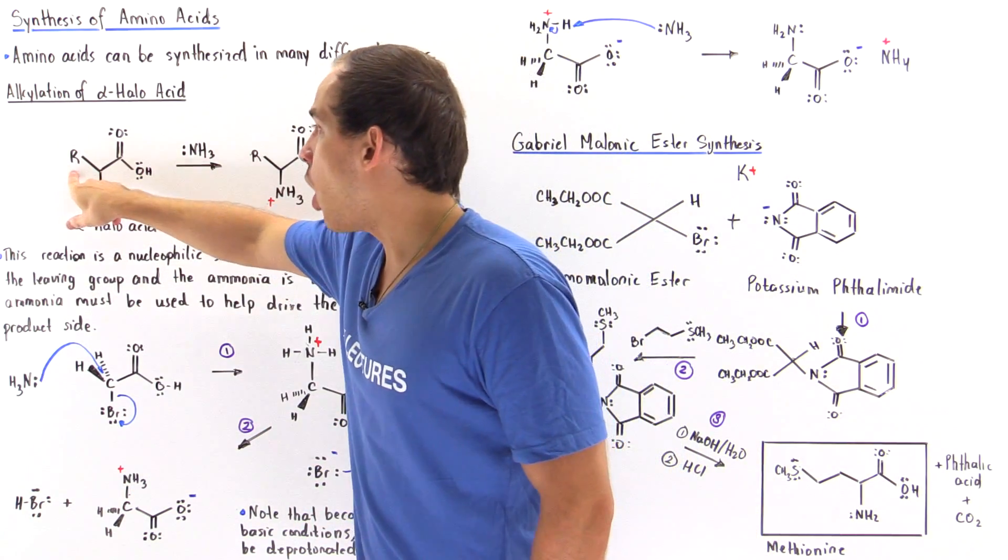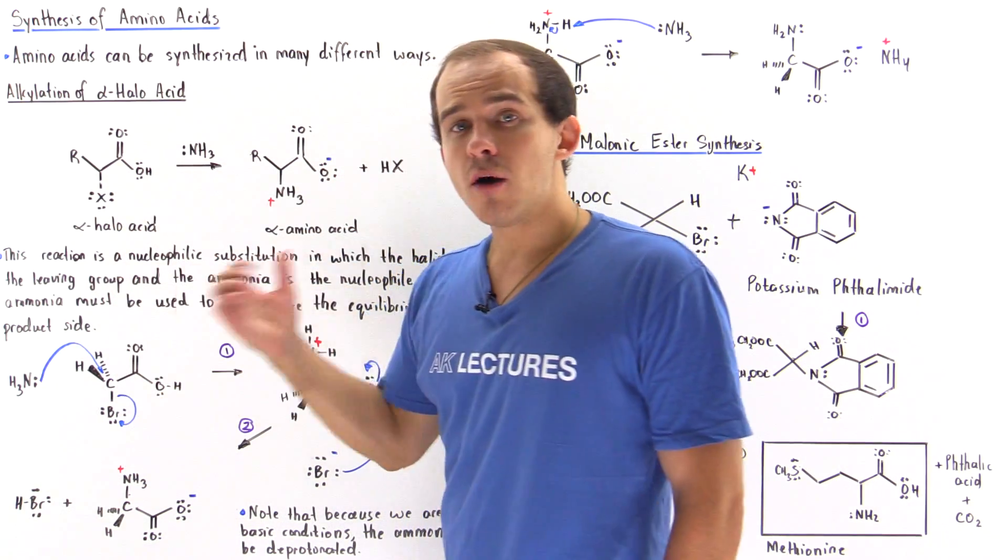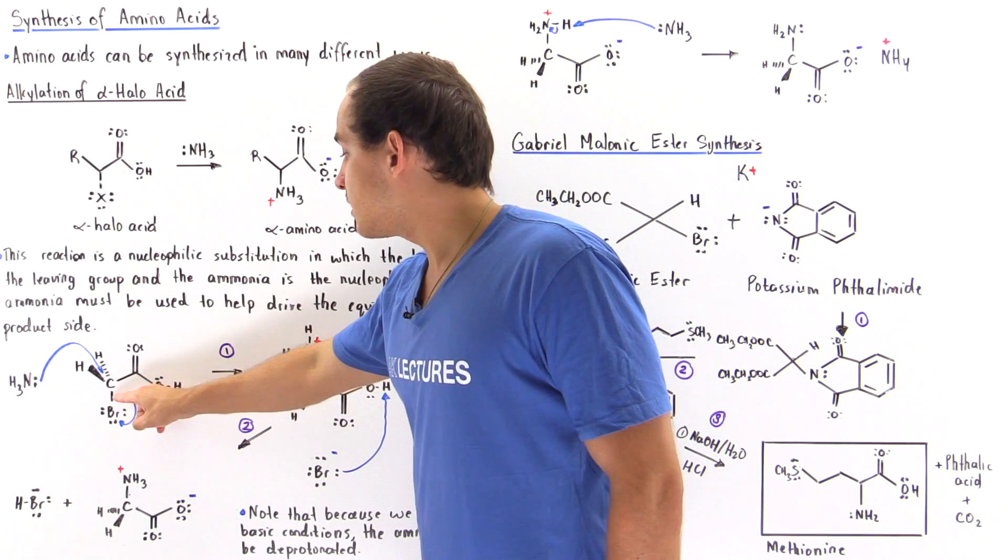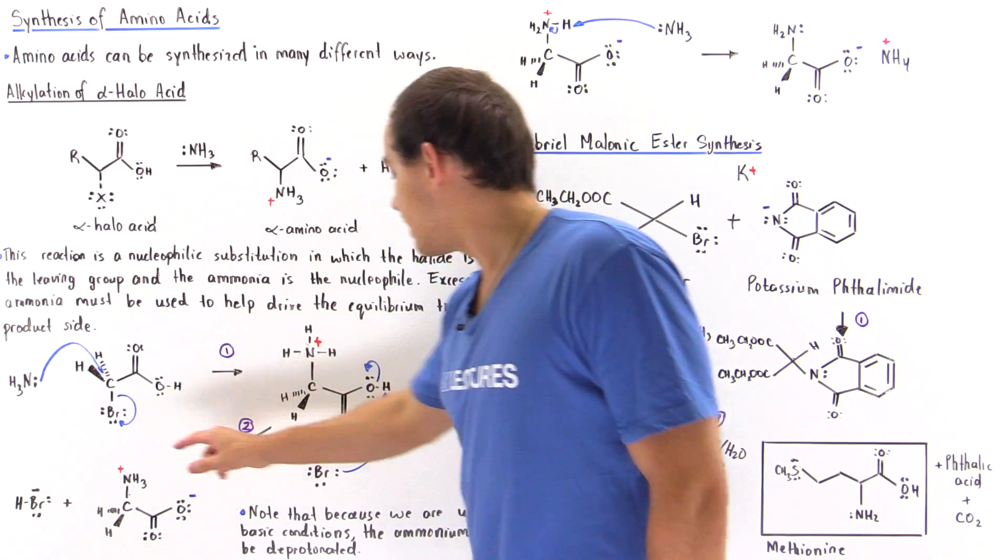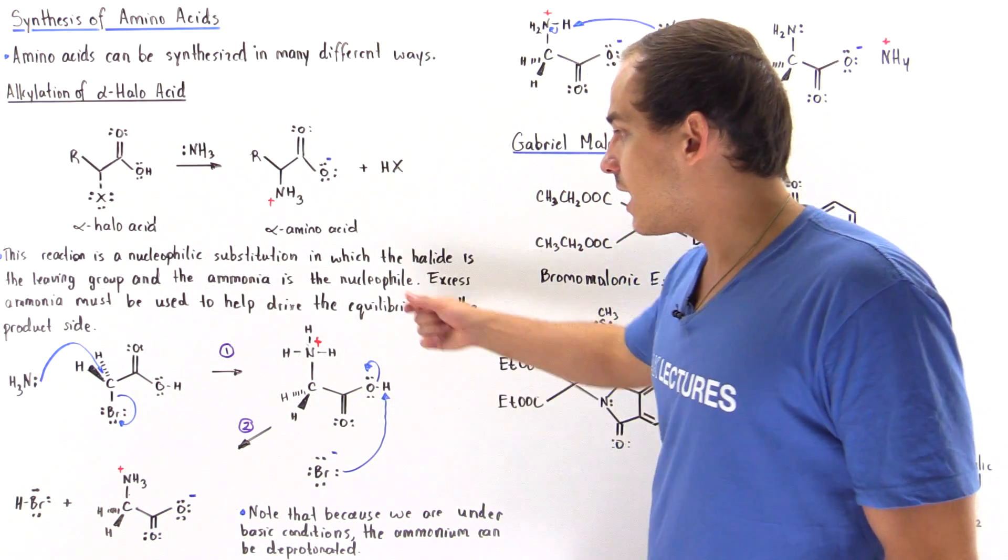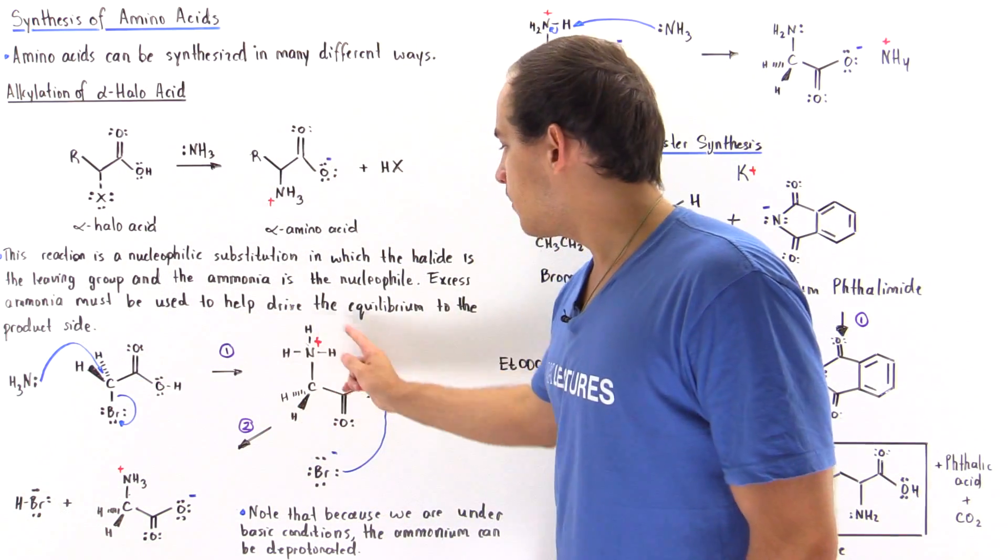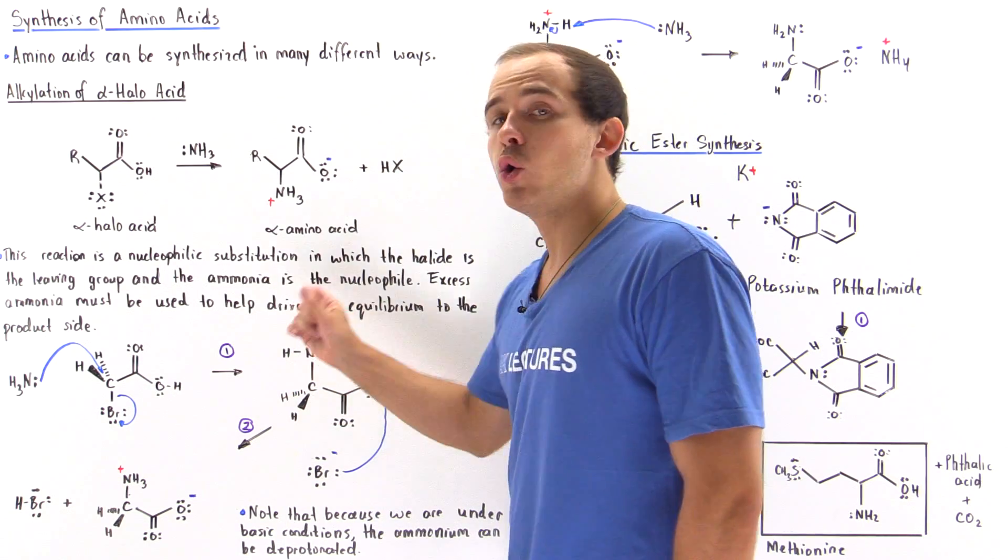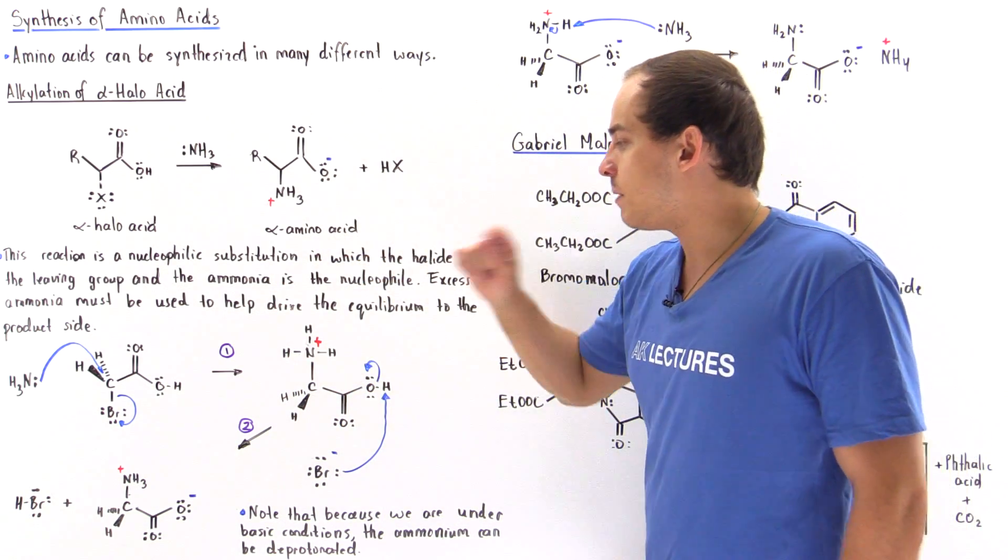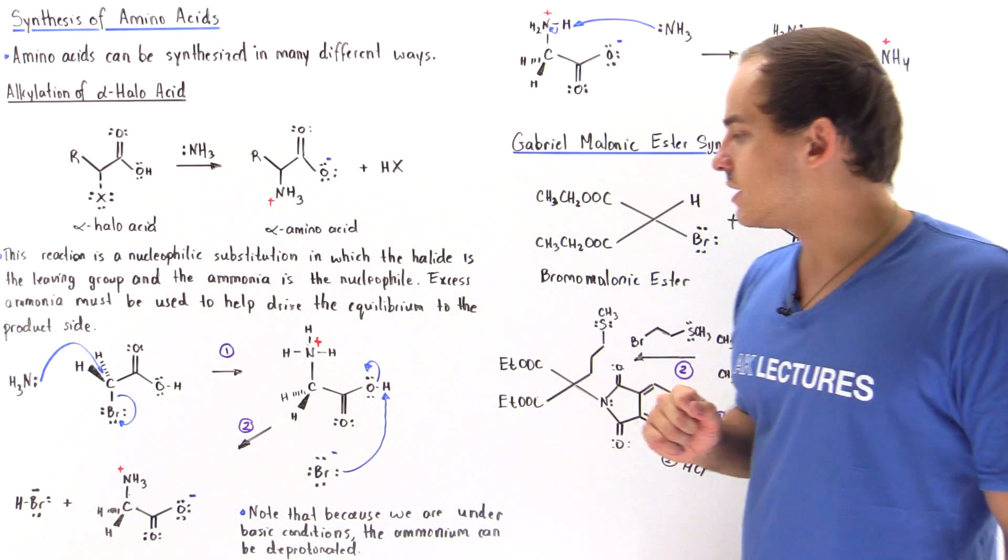So let's suppose that the R group is a simple H atom, and the halogen is a bromide atom. So basically, we displace this bond. We create this bromine ion, bromide ion, and we also form a bond between the nitrogen and the carbon, and so we add our ammonium group. So we have the ammonium group that contains the positive charge on the nitrogen, and we have this carboxylic acid group.